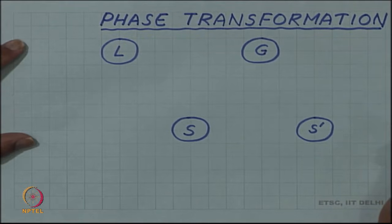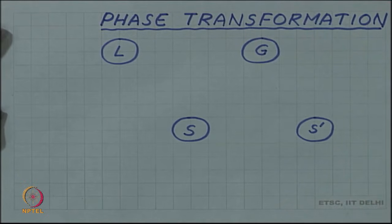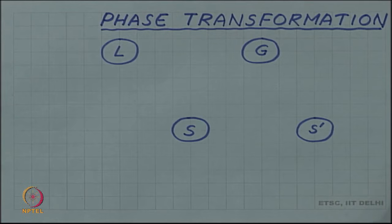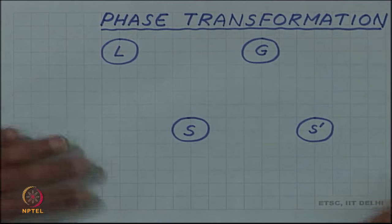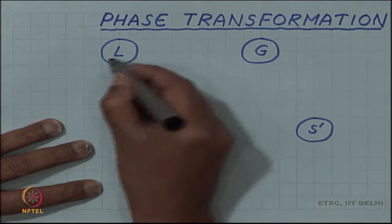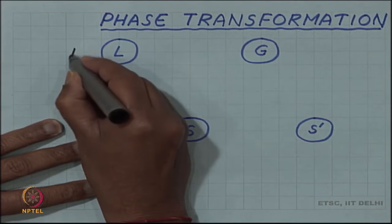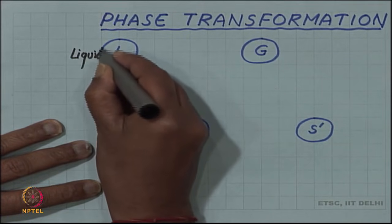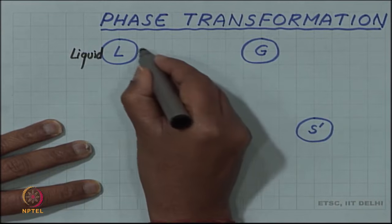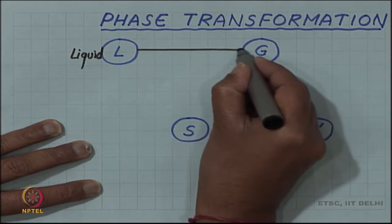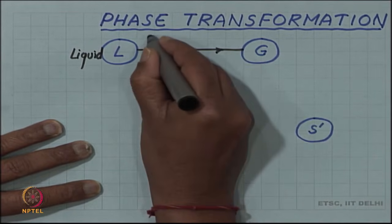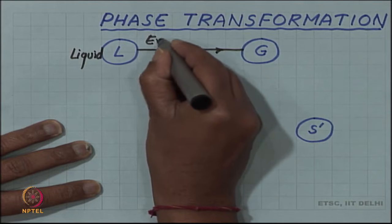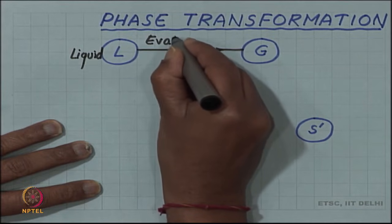We will discuss today the topic of phase transformation. Phase transformation is a transformation from one phase to another phase. For example, a liquid phase shown here by L can evaporate into a gas phase, so we have a transformation called evaporation.